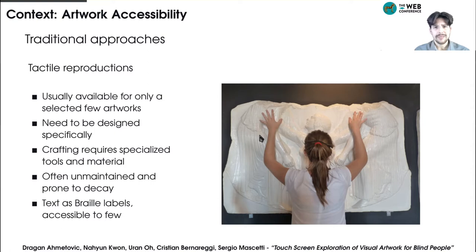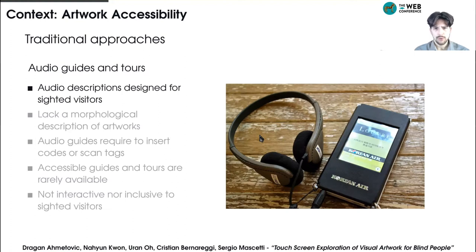Finally, the tactile elements are commonly complemented with braille descriptions, which, however, can be read only by a small fraction of blind people. Audio descriptions instead are commonly designed to be experienced by sighted visitors while looking at an artwork. Indeed, they often prioritize details and curiosities about the artworks and the artists, but they lack a morphological description of the artwork, which makes the understanding of their structure difficult without sight.